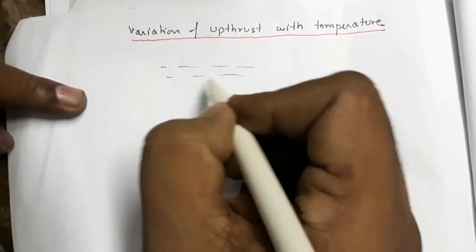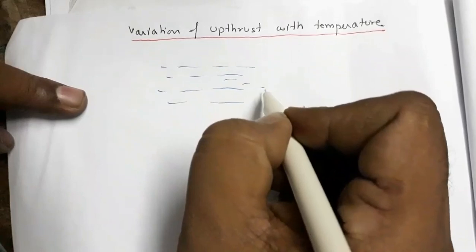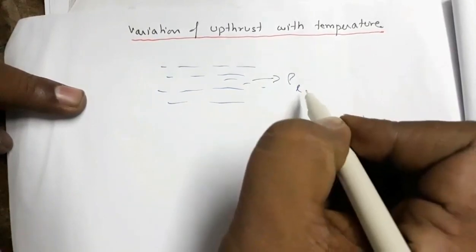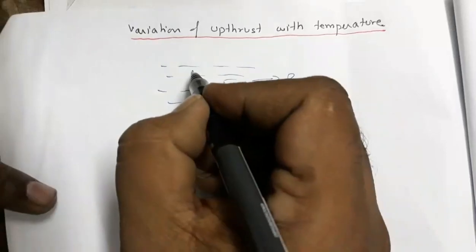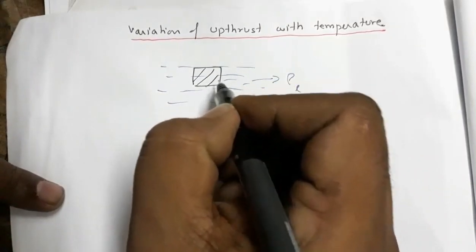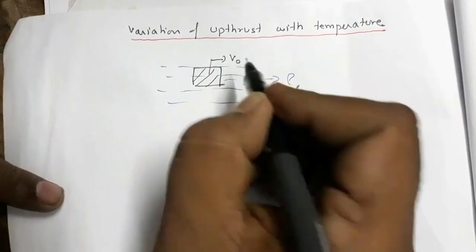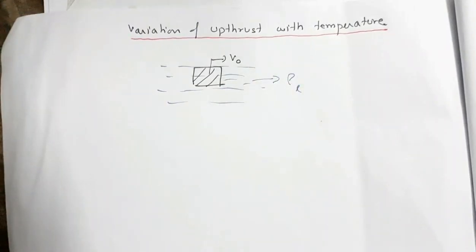Now suppose this is some liquid, and let's say ρL is the density of the liquid. Now an object is immersed in this liquid. Let's say V0 is its volume. So V0 is also the volume of the displaced liquid. So what will be the upthrust?